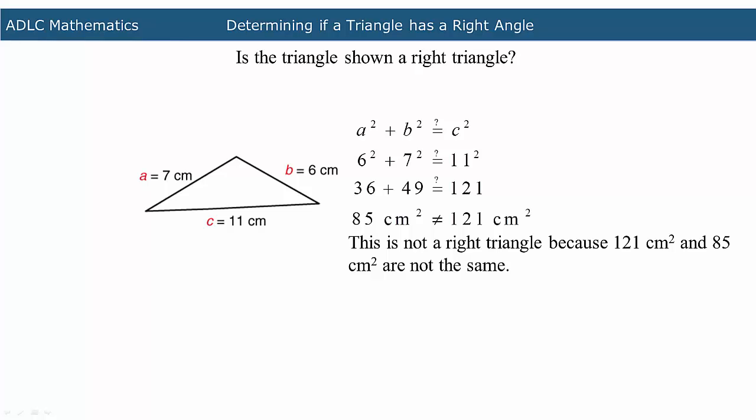Therefore, this is not a right triangle because 121 centimeters squared and 85 centimeters squared are not the same.